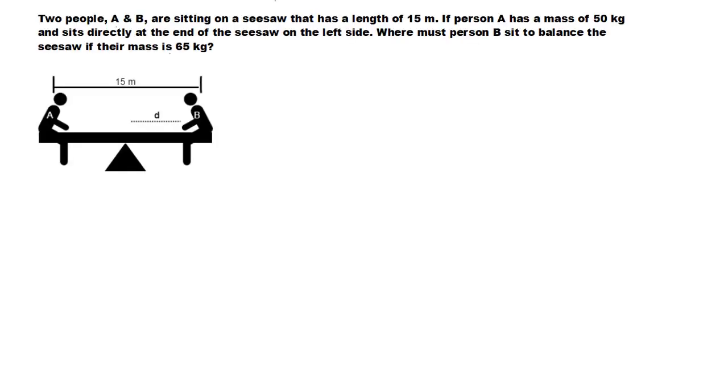Okay, so today we have two people, A and B, sitting on a seesaw that has a length of 15 meters. Now, person A has a mass of 50 kilograms and sits directly at the end of the seesaw on the left side. And we want to know where must person B sit to balance the seesaw if their mass is 65 kilograms.